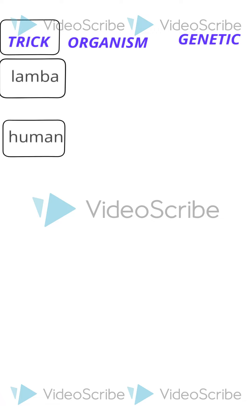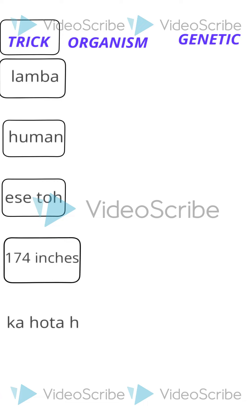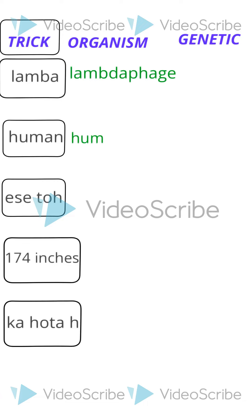The trick is: the big human is 174 inches. We are talking about the human height. The big human genome is 174 inches.